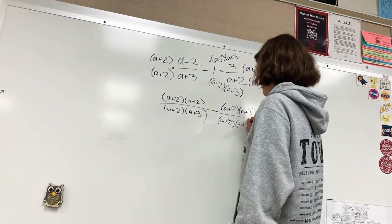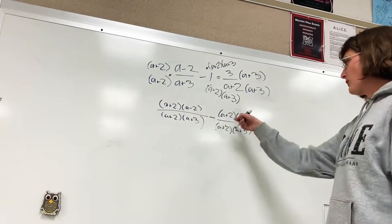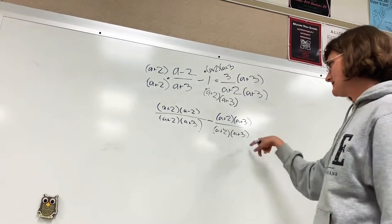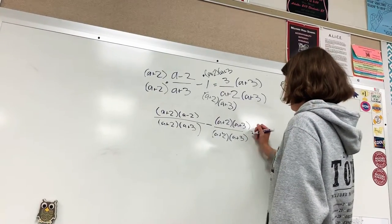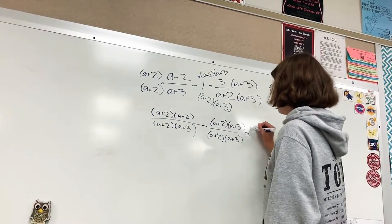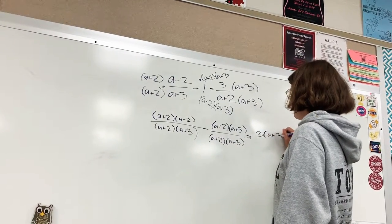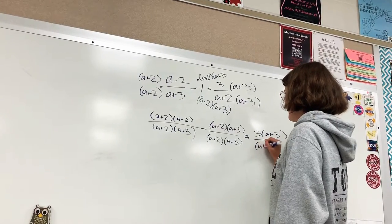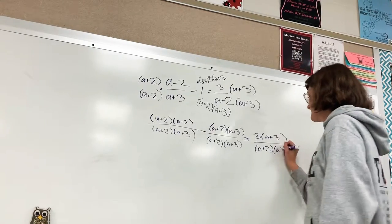So what you're trying to do on these steps is to find a common denominator between all of them. The 1 is equivalent to 1, but to find a common denominator, you're going to multiply by those. So you're going to end up with (a+3) over (a+2)(a+3).